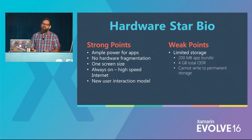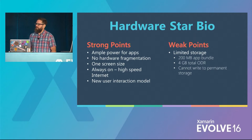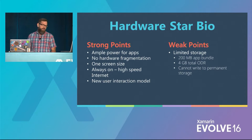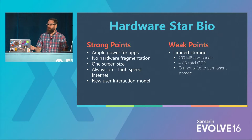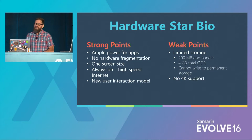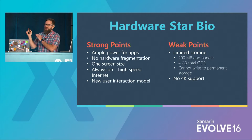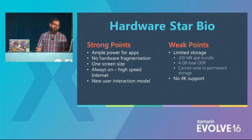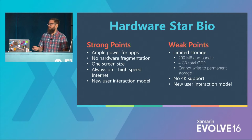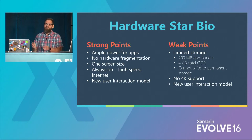Some weak points: limited storage — 64GB high-end, 32GB low-end. App bundles are limited to 200 megabytes, with four gigabytes of on-demand static resources we can download. We cannot write to permanent storage; there's a temporary cache that may be wiped on relaunch, and we can persist up to 500 kilobytes to user settings. There's no 4K support currently, though that means assets only need to be 1x. And the new user interaction model is both a strength and a weakness — we need our apps to behave like other tvOS apps so users don't get lost.